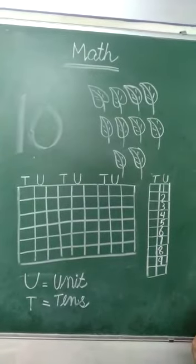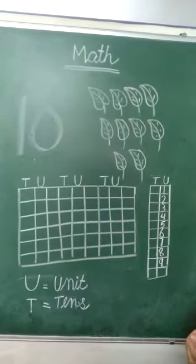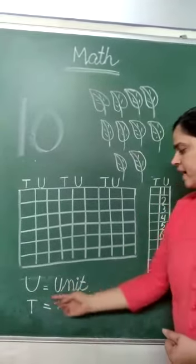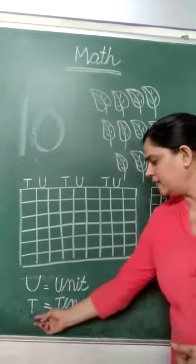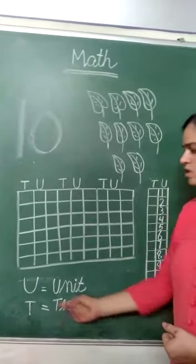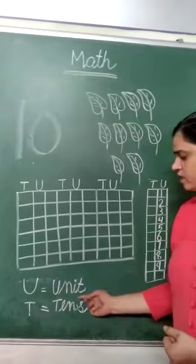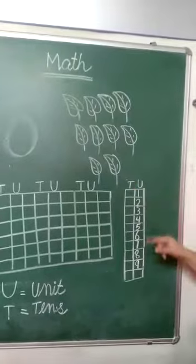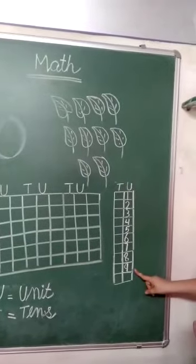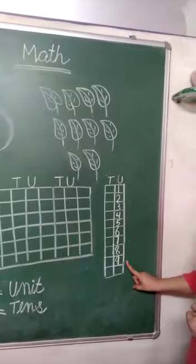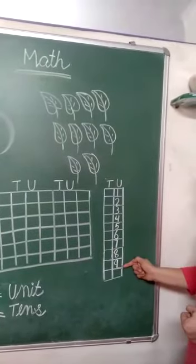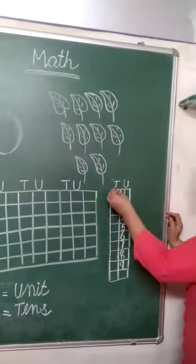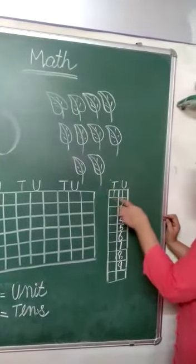Today we are going to clear the concept of units and tens. U stands for unit, T stands for tens. हमने अब तक 1 से लेकर 9 तक वन डिजिट के नम्बर बनाए हैं. यह सब क्या है? 1 डिजिट नम्बर. Unit means 1 डिजिट.